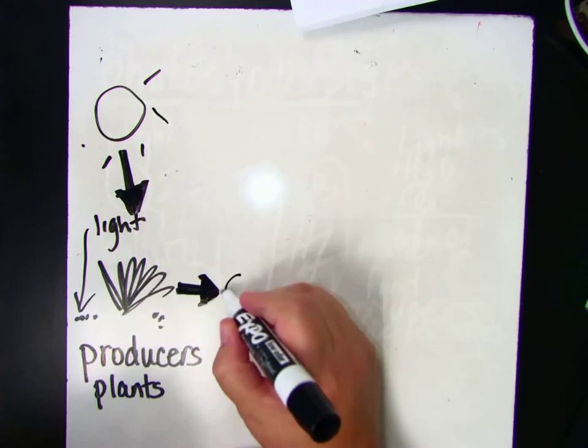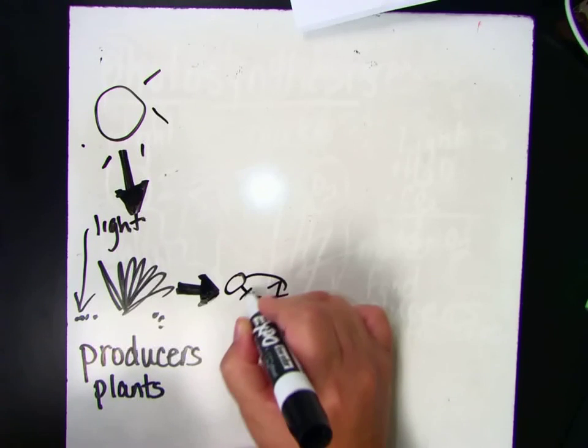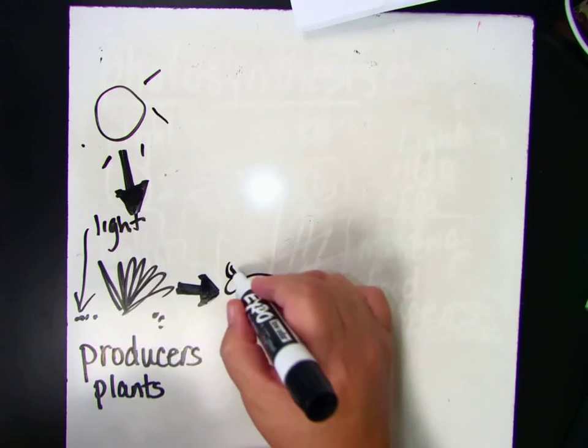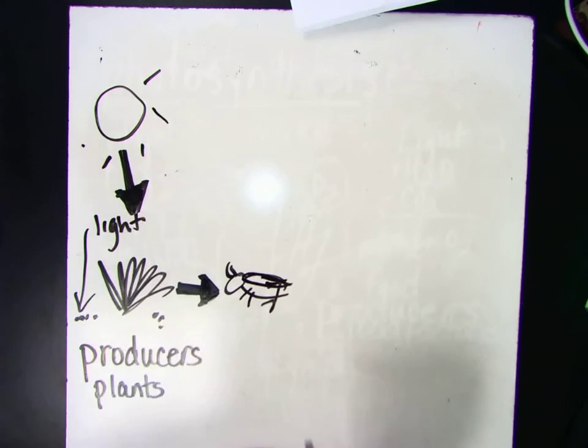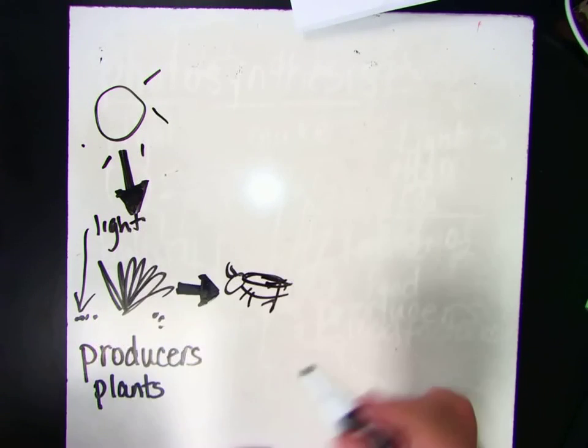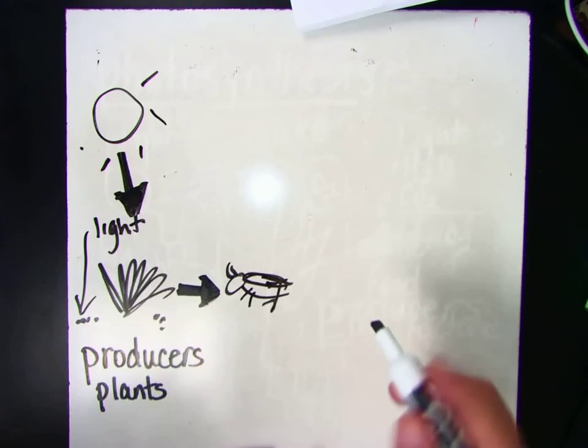In this case, I'll make it a cricket. A cricket might come along and eat the plant and get its energy from the plant. And so the cricket, when he eats the plant, he actually consumes it. Consuming—that's another word for eating.